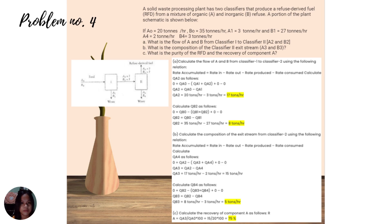To calculate the composition of the excess stream from classifier 2: using the mass balance, 0 equals QA2 minus (QA3 plus QA4). So QA3 equals 17 T/hr minus 2 T/hr equals 15 T/hr. Similarly, QB3 equals QB2 minus QB4 equals 8 T/hr minus 3 T/hr equals 5 T/hr. The purity of the RDF and recovery of component A: purity equals QA3 divided by (QA3 plus QB3) times 100 equals 15 over 20 times 100 equals 75%.